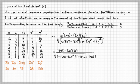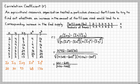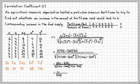The next step is to start multiplying and simplifying. 7 times 93 gives 651, minus 20 times 30 which is 600, divided by: 7 times 68 gives 476, minus 20 squared which is 400, in brackets; times 7 times 136 which gives 952, minus 30 squared which is 900, in brackets — with the square root. So we get 51 divided by 76 times 52. 76 times 52 gives 3952. So we have 51 divided by the square root of 3952.